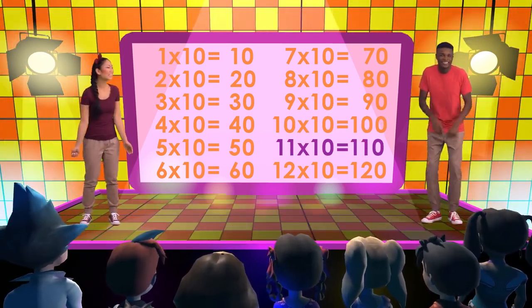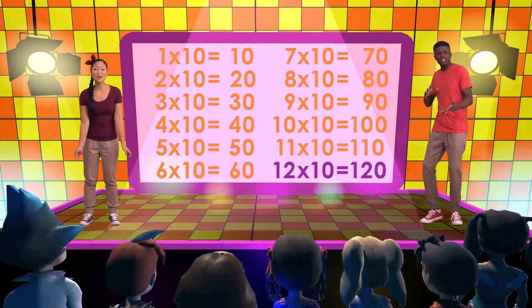Eleven times ten is one hundred ten. Twelve times ten is one hundred twenty.